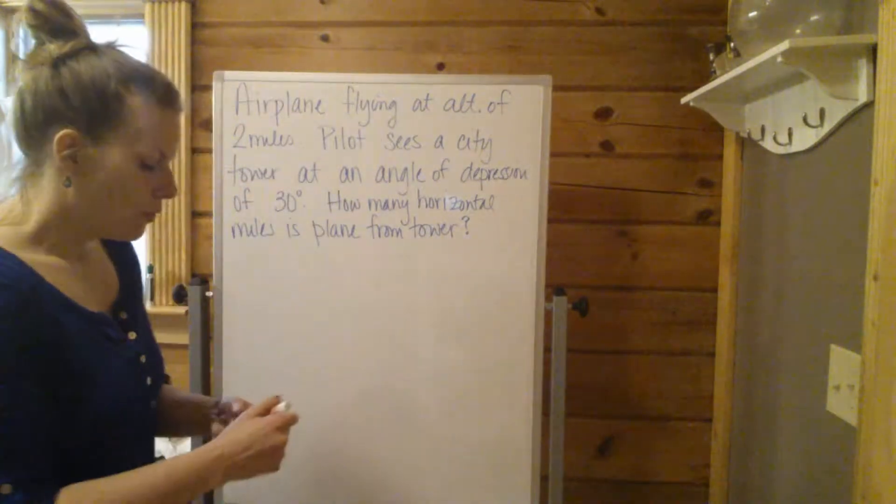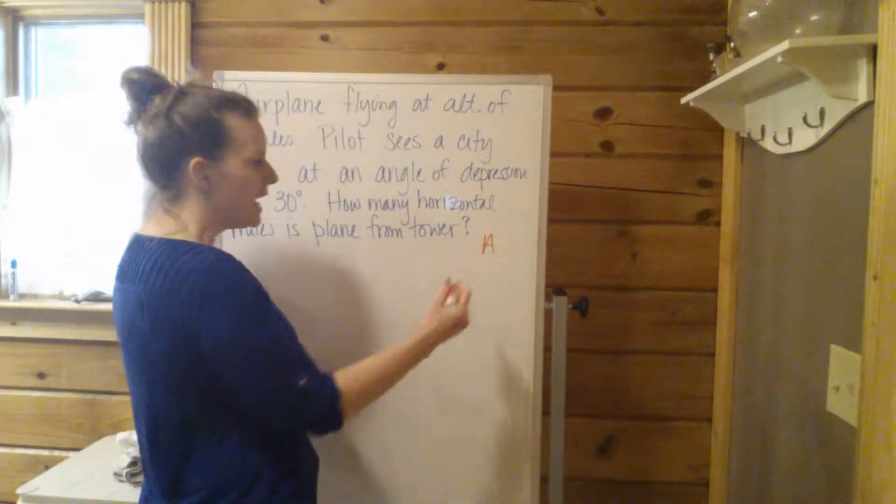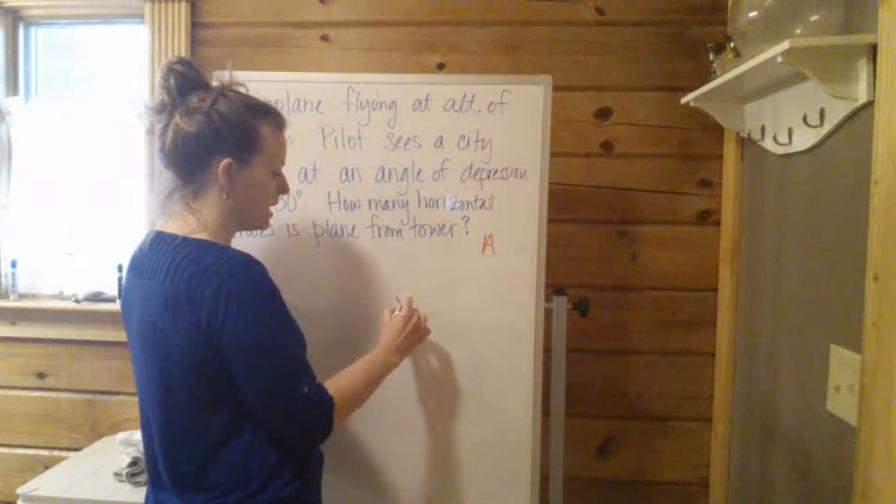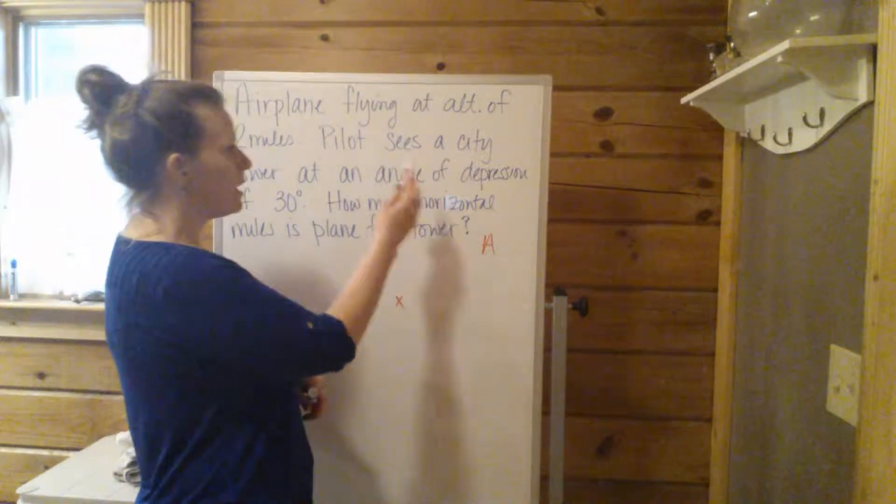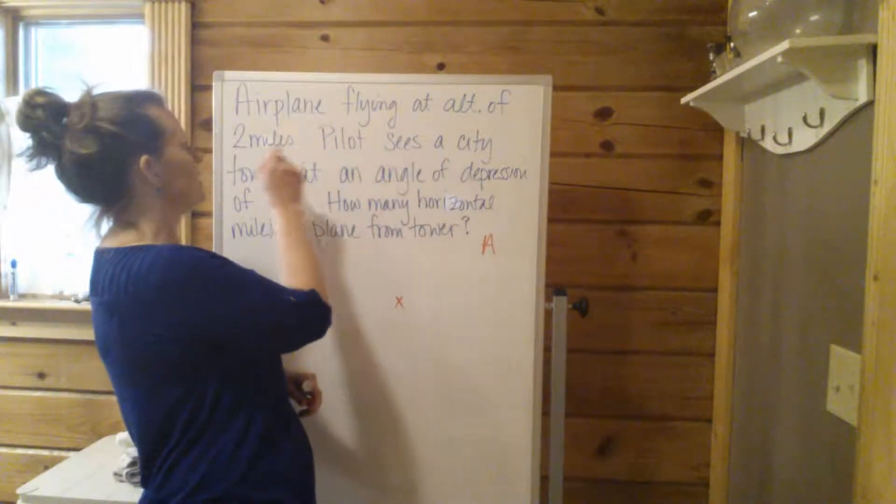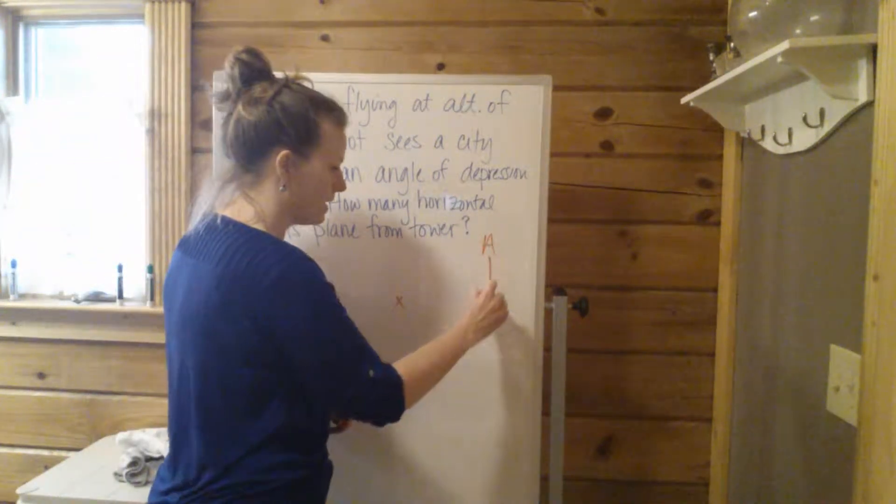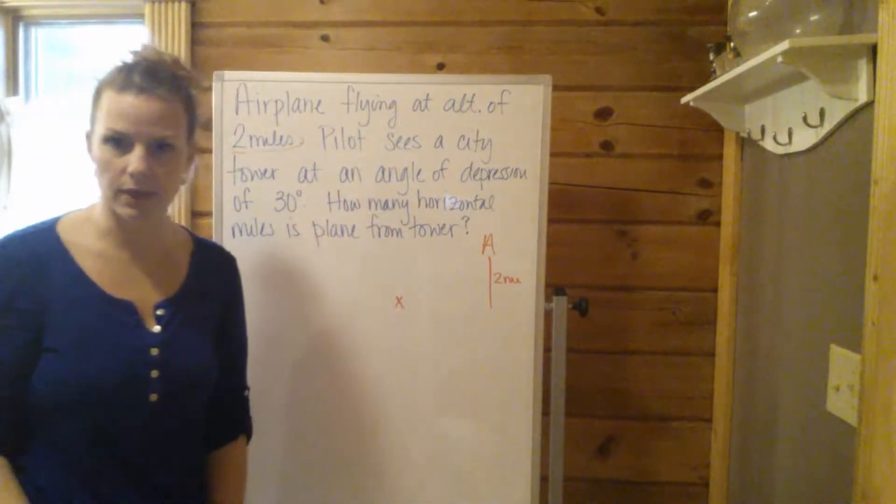So here's our setup. We have an airplane, let's just label it A. And the pilot in the airplane is looking at a city tower, let's say down here. Now we know a couple things. We know the airplane has an altitude of two miles. So that's the straight up and down height of the airplane.